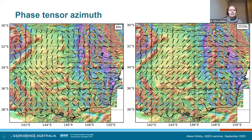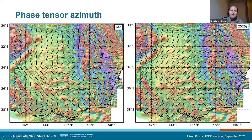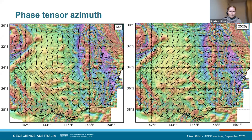There are also areas where we get a contrast — the phase tensor azimuth seems to be cross-cutting what we see in western New South Wales and western Victoria, which may reflect the fact that MT responses are sampling deeper in the lithosphere than the magnetic map, which tends to be dominated by the near surface.